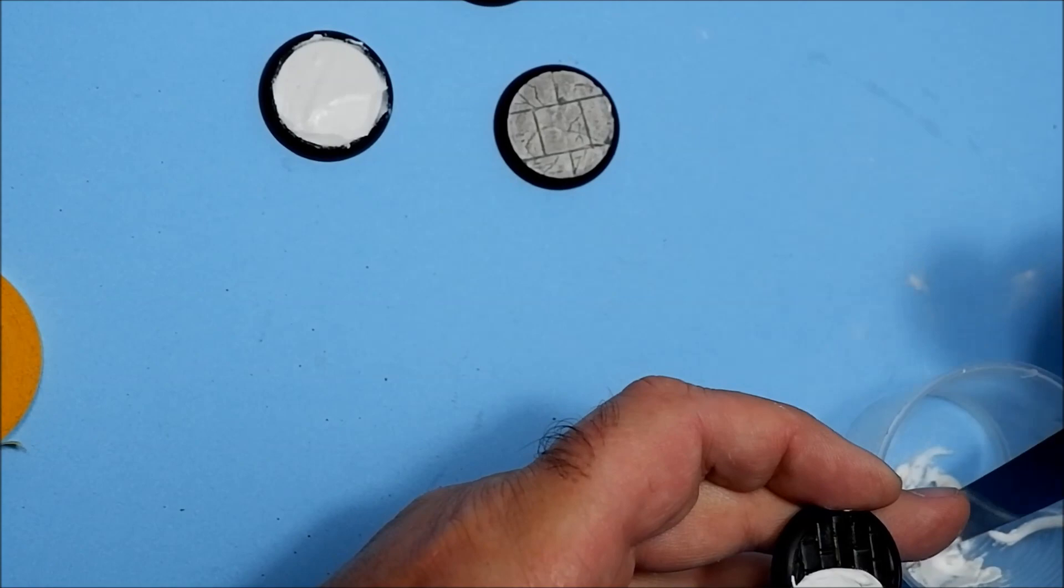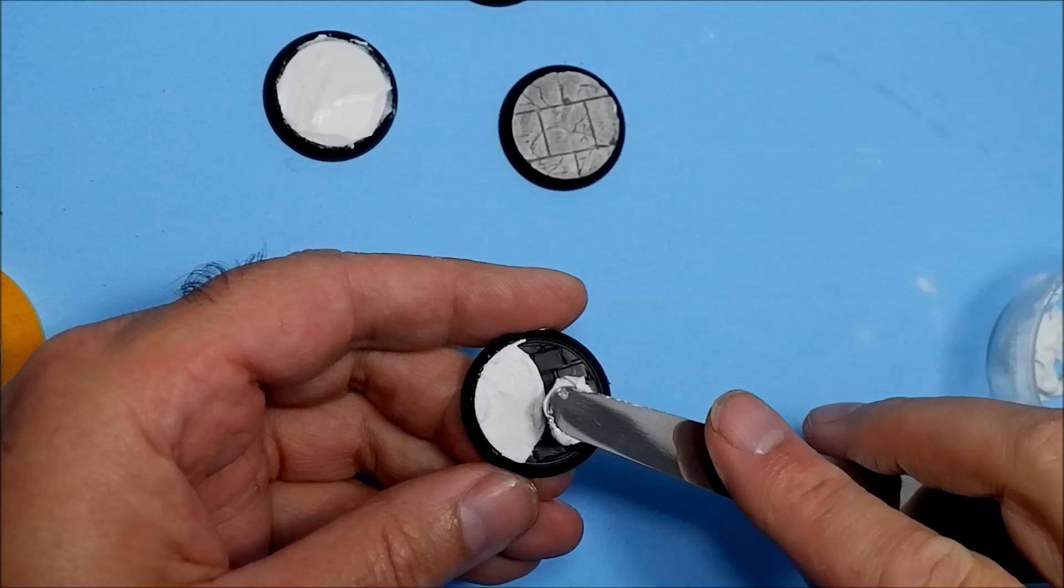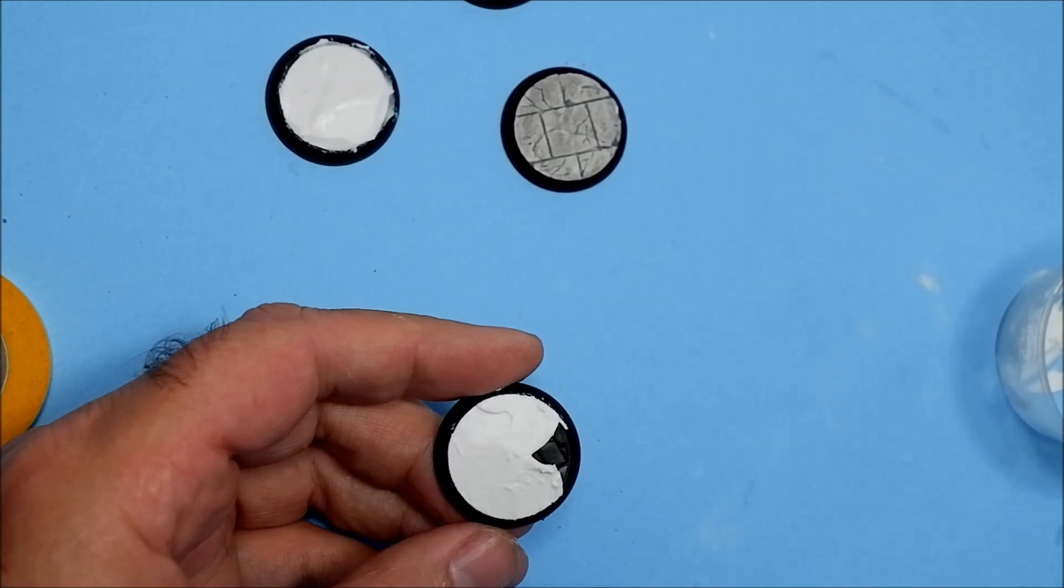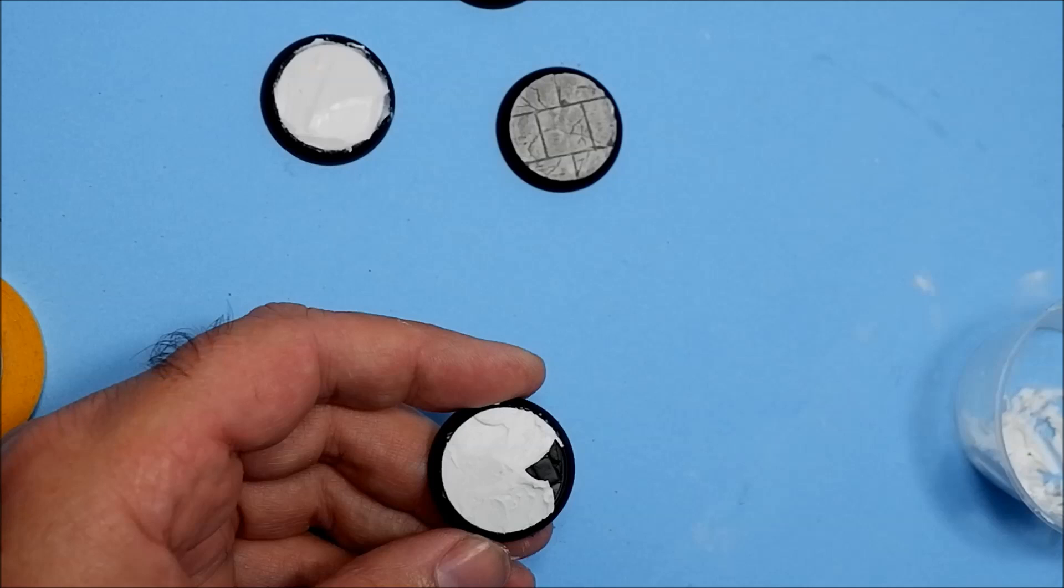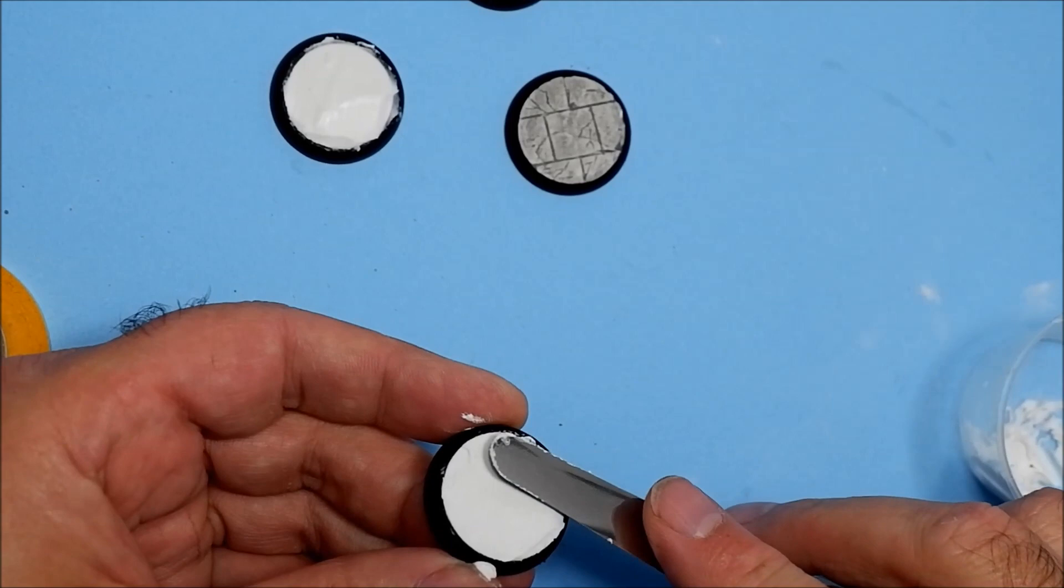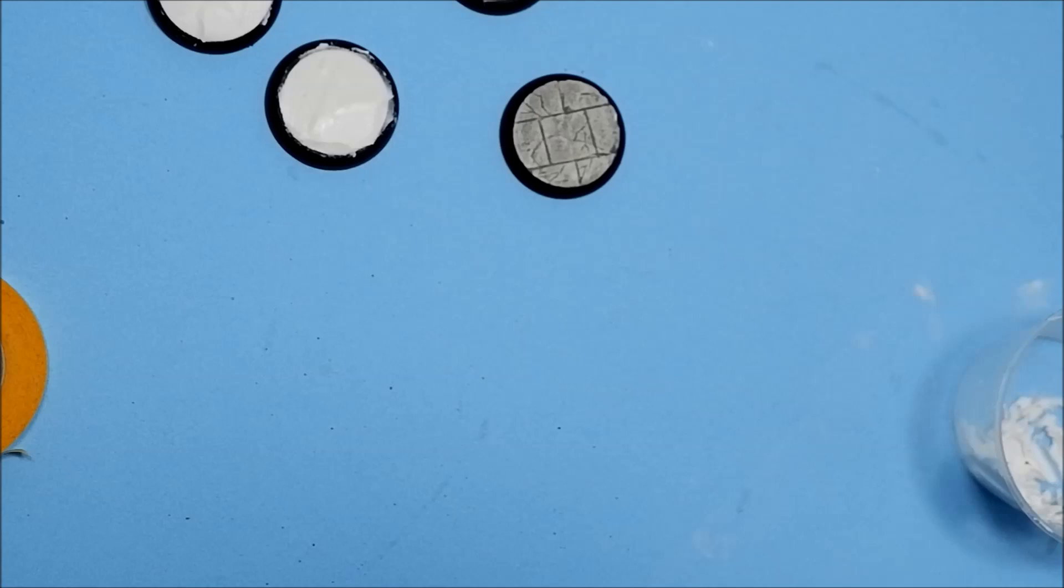Just to show it's exactly the same process for the Knight Models bases as well. Just a case of filling up the gap. A good thing about these lip bases is it gives you an edge to work with, so it doesn't just fall off the sides of the bases. So that's it, full and scrape across the top, get rid of the excess, just smooth it off.